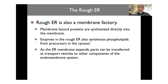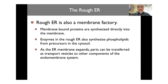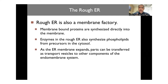The rough ER is also the place where membranes are made and membrane-bound proteins are synthesized directly into that membrane. Enzymes in the rough ER also synthesize phospholipids from precursors in the cytosol. As the ER membrane expands, parts can be transferred as vesicles to other components of the endomembrane system, including the smooth ER, and from there to the Golgi. It's like a conveyor belt — stuff moves from one compartment to the next until it reaches the site where it needs to function.